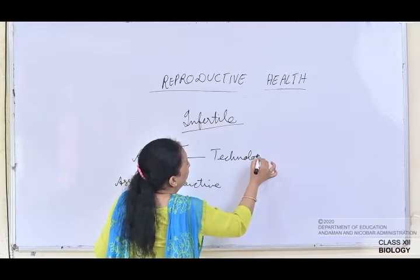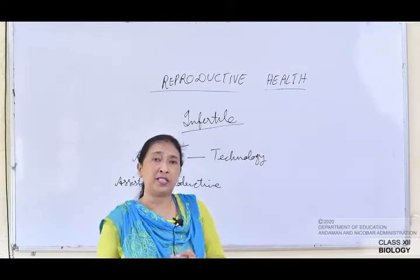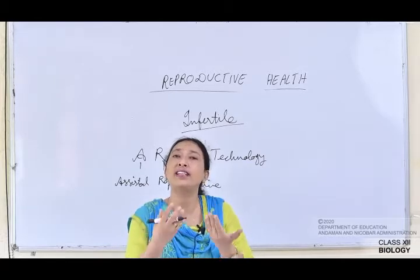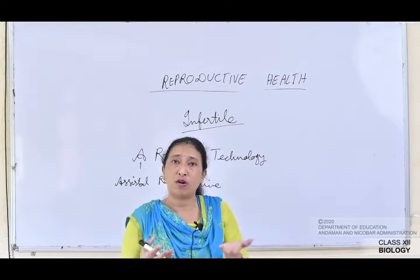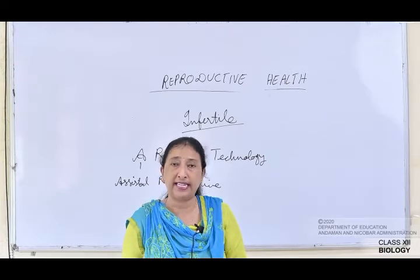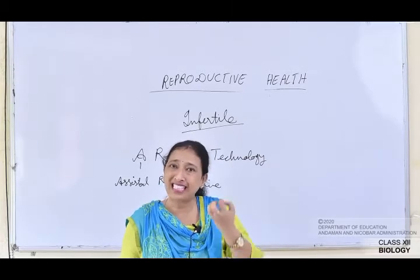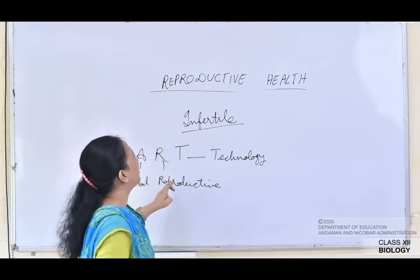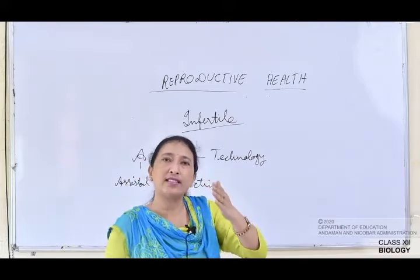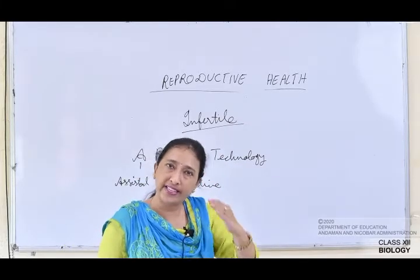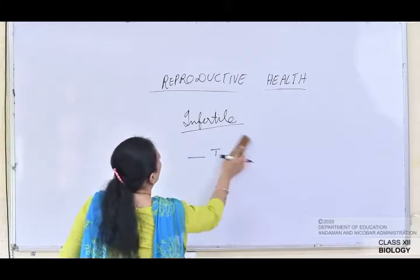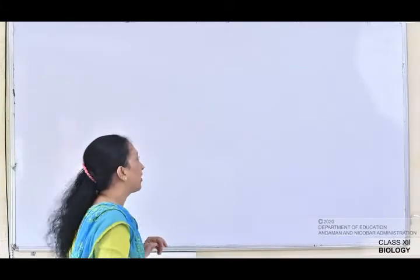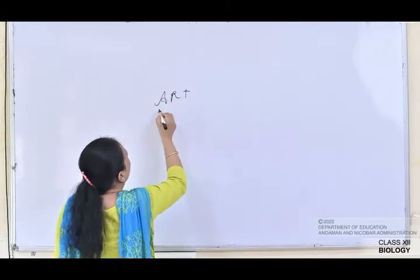Assisted Reproductive Technology refers to all technologies performed outside the body of the person — male or female — which are then used to help conceive the child. There are various ART technologies; we will see them one by one. The common one among them is IUI — Intra Uterine Insemination.